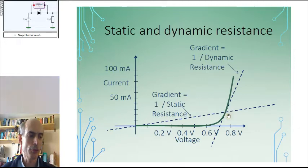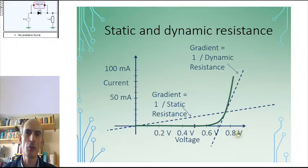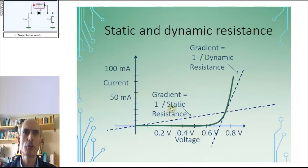Static resistance is the ratio of the voltage across a component to the current flowing through a component. If I plot a graph with current on the y-axis and voltage on the x-axis, the gradient is going to be the current divided by the voltage, which means the static resistance will be 1 over the gradient.